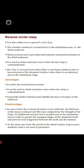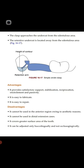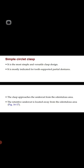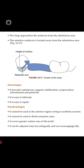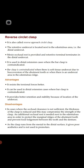The reverse circulate clasp is used in distal extension cases where the bar clasp is contraindicated. Remember: the simple circulate clasp cannot be used in distal extension cases, but the reverse circulate clasp can. The bar clasp is contraindicated where there is a soft tissue undercut, or due to buccal version of the abutment tooth, or where there is an undercut area in distal extension cases.